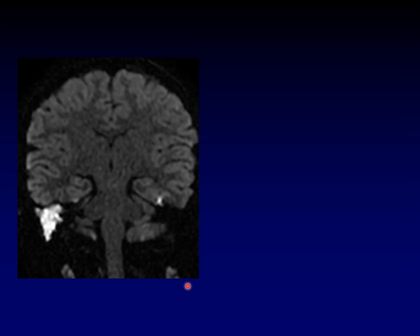This is what recurrent cholesteatoma looks like in a different patient. It is much brighter than the brain. So don't settle for it being similar to the brain — that does not mean it's a recurrent cholesteatoma. It should be brighter than brain, not just brighter than the surrounding temporal bone — brighter than gray matter on a diffusion-weighted image. That's a recurrent cholesteatoma.